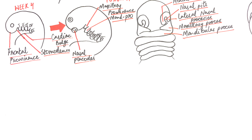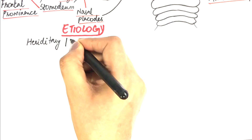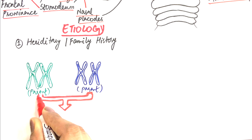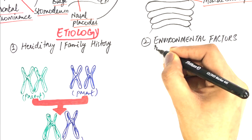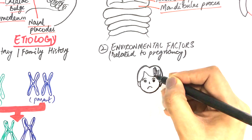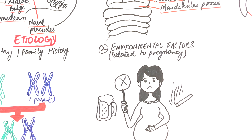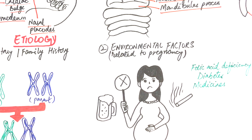The most common cause of cleft lip and palate is hereditary or family history of cleft lip and palate. In hereditary cases, the main problem is within the genes — defective genes leading to clefts are transferred from parents to their offspring. Some environmental factors related to pregnancy can also lead to orofacial clefts, including smoking, drinking alcohol in high amounts during the first trimester, folic acid deficiency, diabetes, taking certain medicines, obesity, or the presence of certain infections.